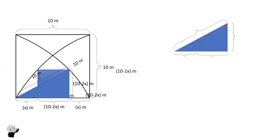So from here, by using Pythagoras theorem, we can solve for x. This side is the hypotenuse. So we are going to get 10² equals (10 - 2x)² plus this side is x, this side is minus 2x, so you are going to get (10 - x)².